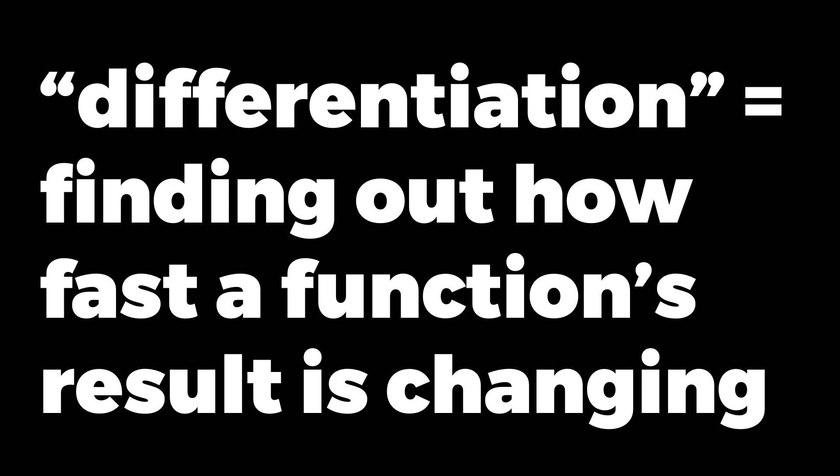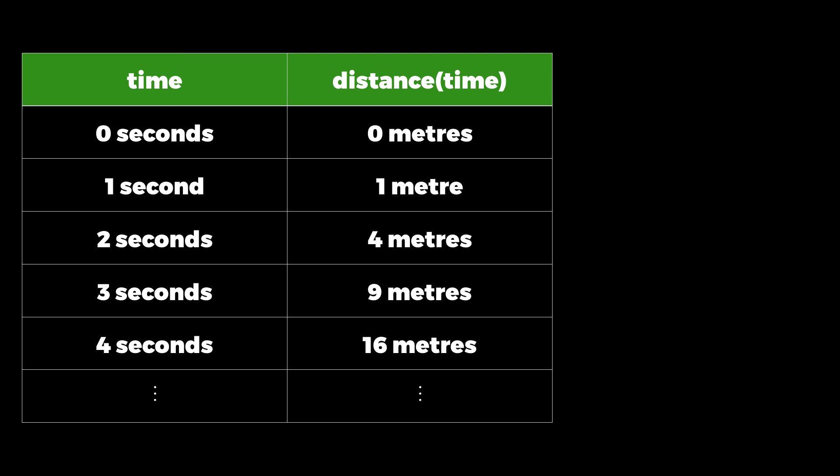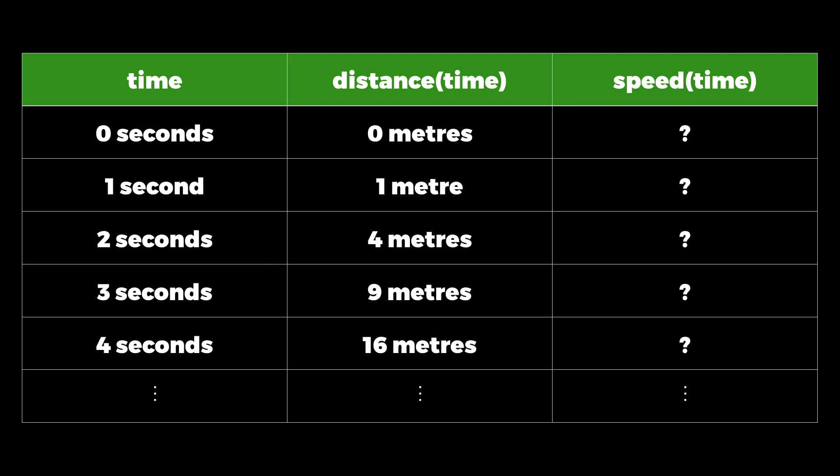Differentiation is the process of finding out how fast a function's result is changing. And to keep this video short, you'll just have to believe me that this is a useful thing to be able to do on a computer. So if we take a distance function and differentiate it, we get another function that tells us how fast the distance is changing, which in physics we call speed.